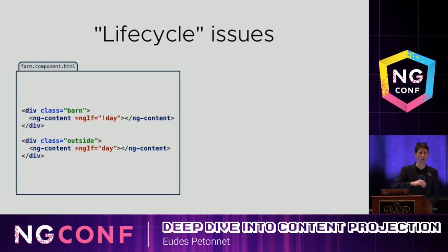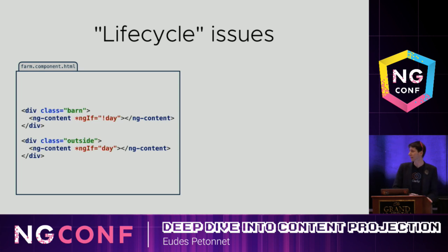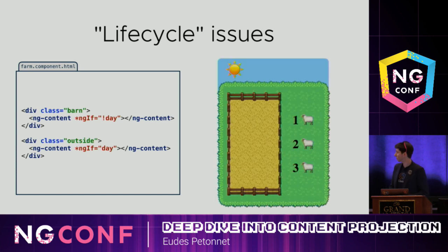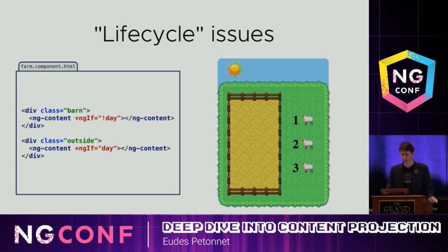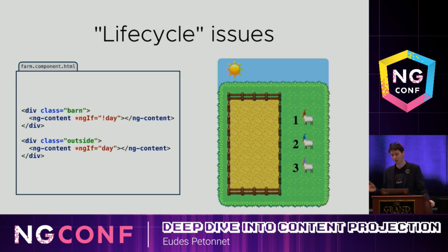This is something you see in almost every app. You're projecting your sheep, and instead of a simple pasture or farm, you have a barn and the outside of the barn — a whole farm. You want the sheep inside the barn at night and outside during the day. When you try this during the day, the sheep are outside; everything looks fine. Then night comes — they disappear, presumably partying somewhere, because they come back the next day.